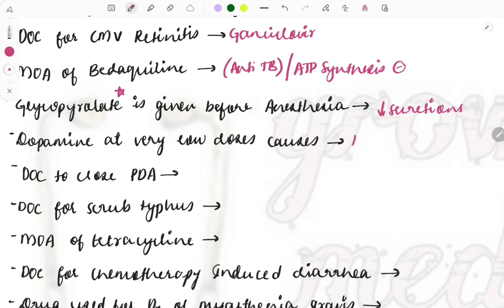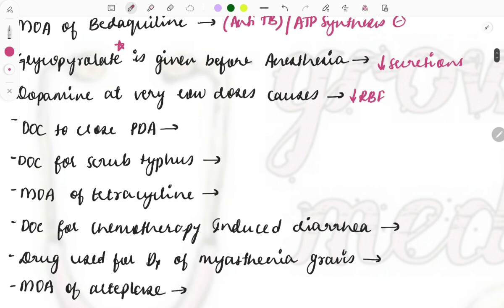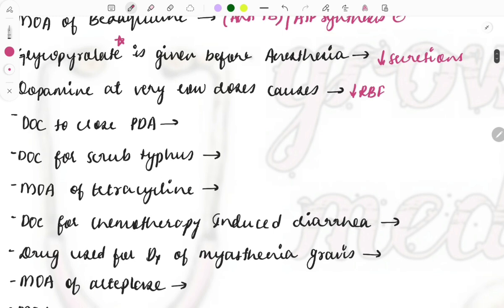Dopamine at very low doses causes decreased renal blood flow. Next: drug of choice to close the PDA (patent ductus arteriosus) is indomethacin. Indomethacin belongs to the non-steroidal anti-inflammatory drugs category.